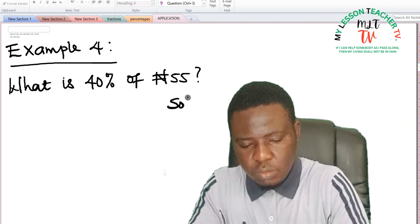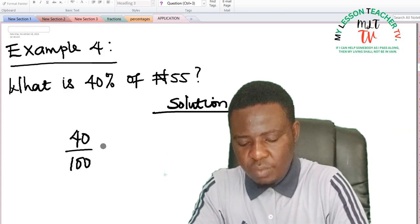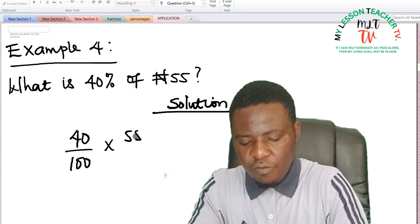Solution: we have it at 40% means 40 over 100 of 55 Naira.